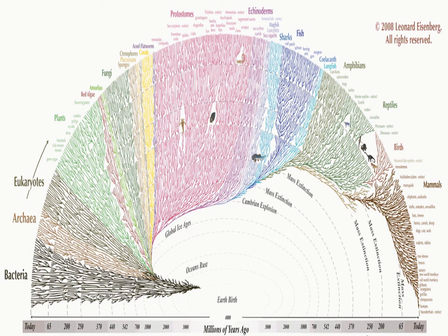It goes from the earliest formation of the planet and the first things we see in the fossil record, which are bacteria — prokaryotes, no nucleus, tiny little things, fossilized. Going upwards, we have another group really similar to bacteria called the archaeans. Archaeans are basically bacteria but with slightly different proteins, and they're actually more closely related to eukaryotes than bacteria are.